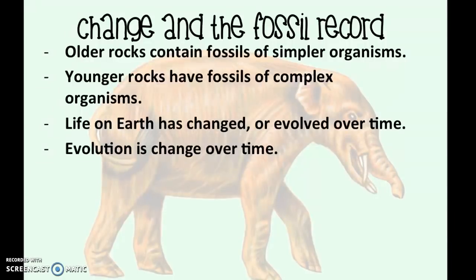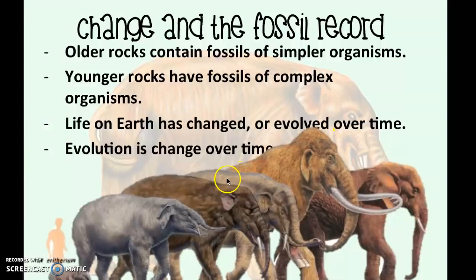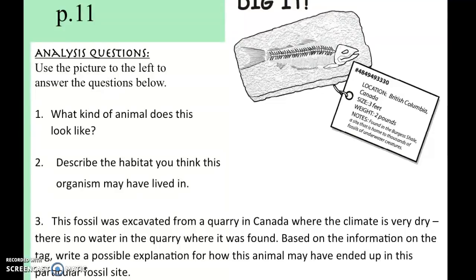Without preserved fossils we wouldn't have information about Earth's past organisms. Evolution tells us how things have changed over time, and examining the fossil record reveals both geological and biological evolution. For example, comparing today's elephants to the woolly mammoth, paleomastodons, and shovel tuskers — all members of the order Proboscidea — shows us how this family has changed. By examining their fossils, we can see how these organisms are similar and different.